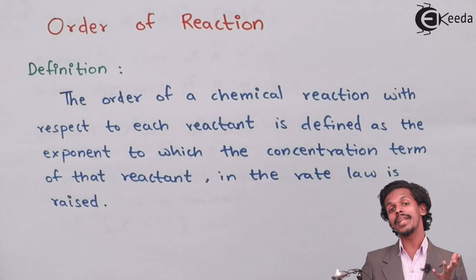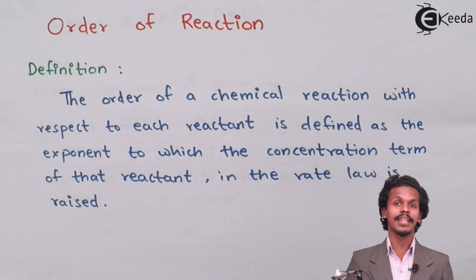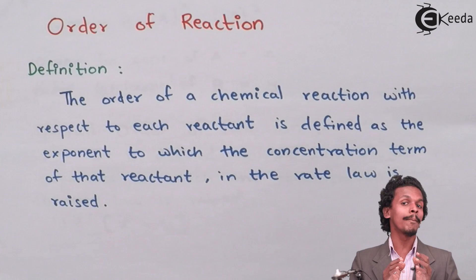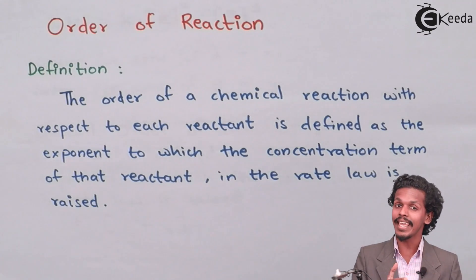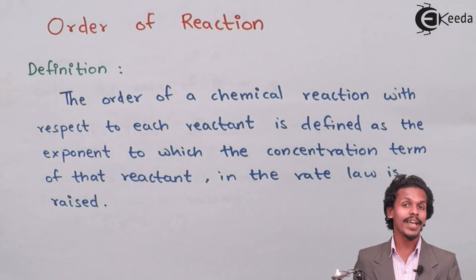Let me give you a brief idea. Suppose I have earlier explained that A raised to X and B raised to Y. So in this case, the order of reaction for the component A, or I could say the order of reaction for the reactant A, is now X. And for the reactant B will be Y.